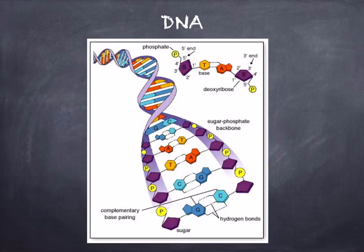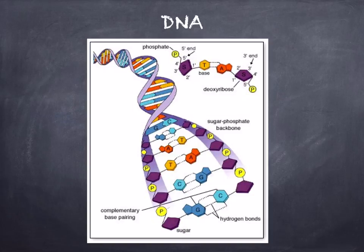Deoxyribonucleic acid, DNA, is made up of two nucleotide polymer strands. These strands are extremely long, and they're wound around each other to form a double helix, like you can see here. The nitrogenous bases — adenine and thymine, and cytosine and guanine — are on the inside of the helical cylinder, with the sugar-phosphate backbone being on the outside of that helix. This is important because it means that the genetic information is protected to some extent from being corrupted by outside chemical and physical factors.